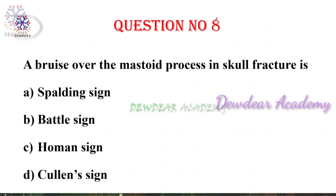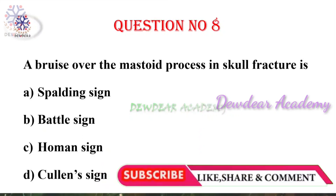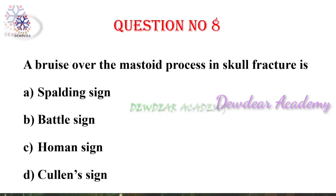Question number eight: A bruise over the mastoid process in skull fracture is — options: Spalding sign, Battle sign, Homans sign, Cullen sign. The answer is Battle sign. Spalding sign is the overlapping of fetal skull bones caused by collapse of the fetal brain.